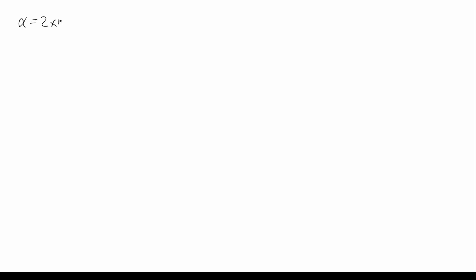In the question we have: linear expansion of a metal is 2×10⁻⁵ and its length is 1 meter at temperature T₁ equal to 25 degrees Celsius. We need to find T₂ where the metal is shortened by 1 millimeter, so delta L is negative.